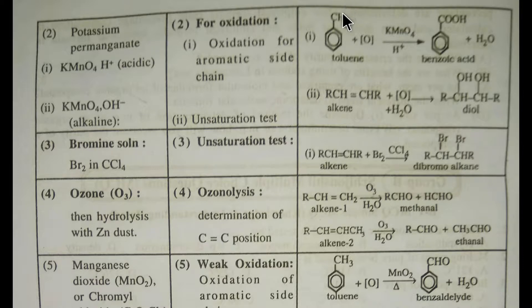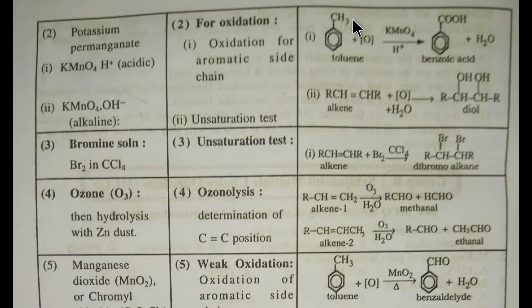For example, toluene — which has an aromatic side chain — if we add potassium permanganate in acidic solution, we will get benzoic acid. This is the oxidation of the side chain of an aromatic compound.